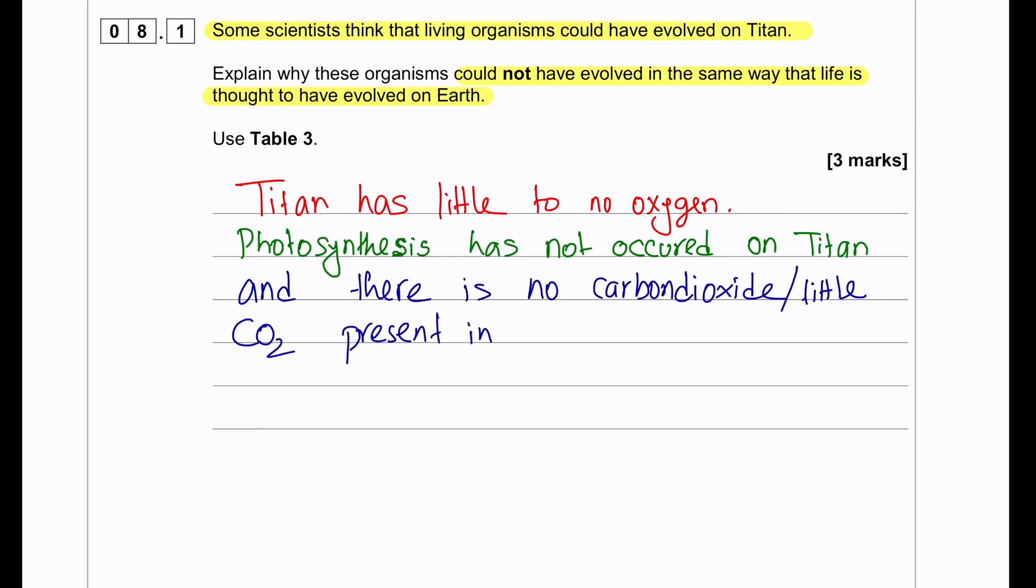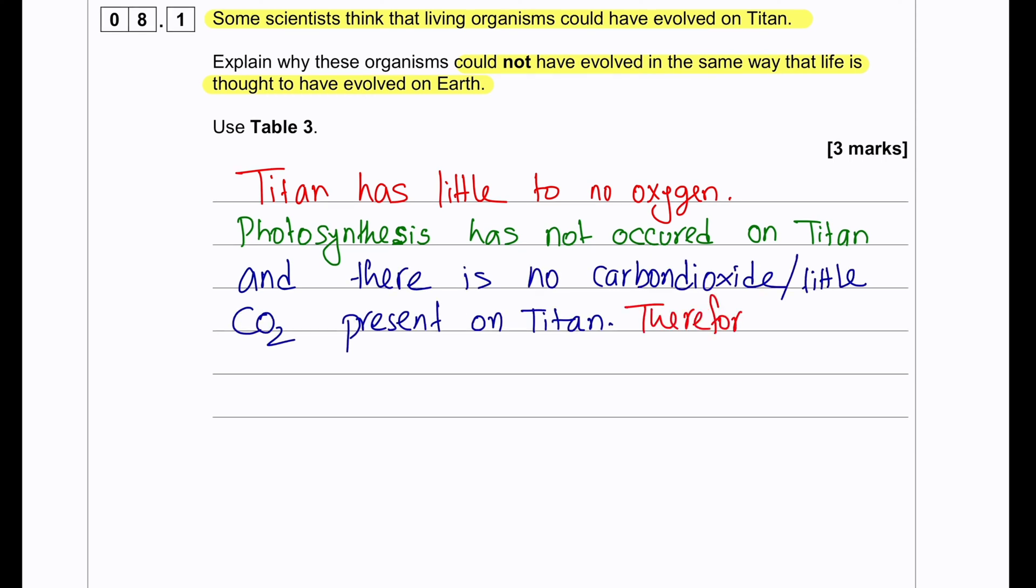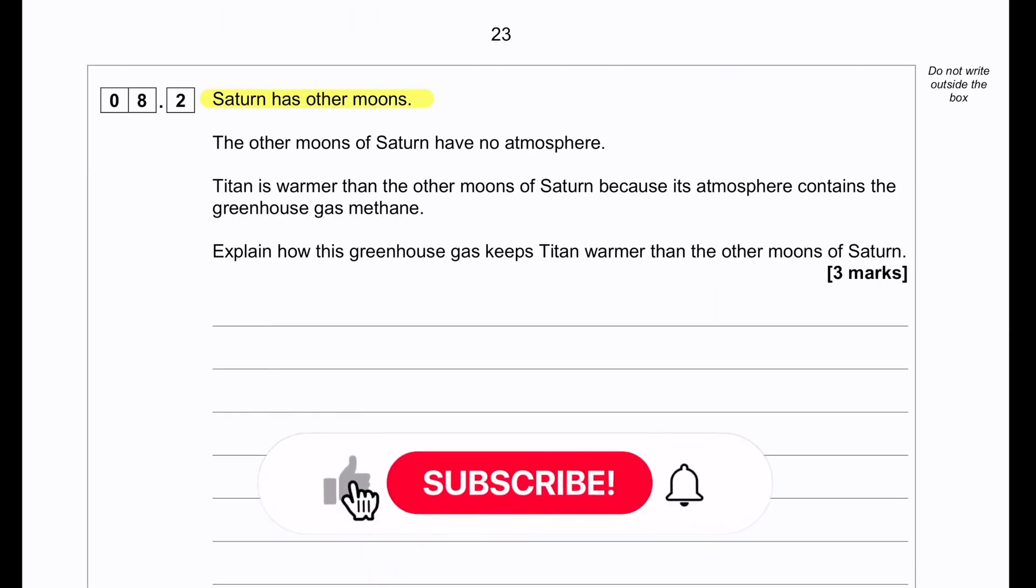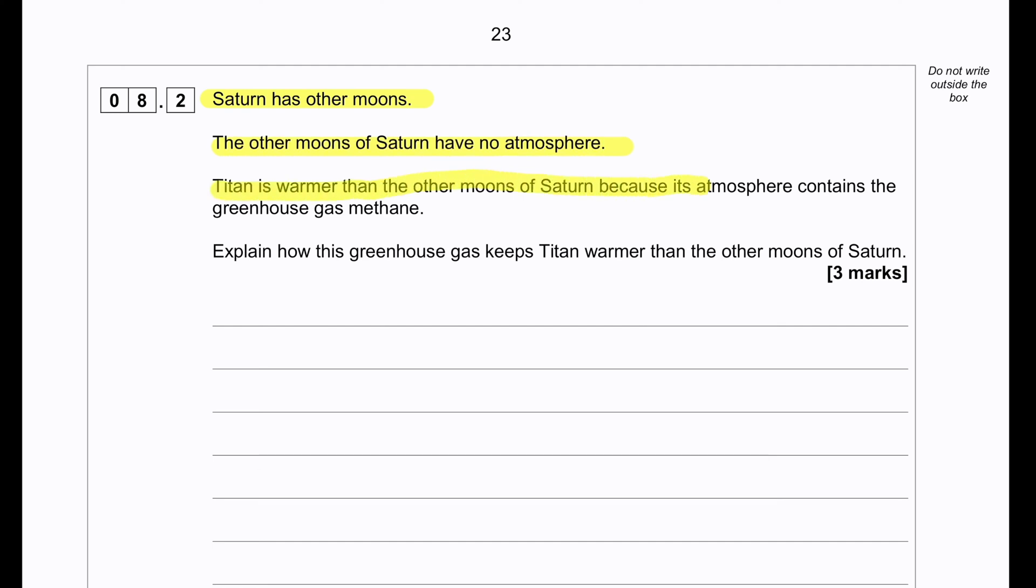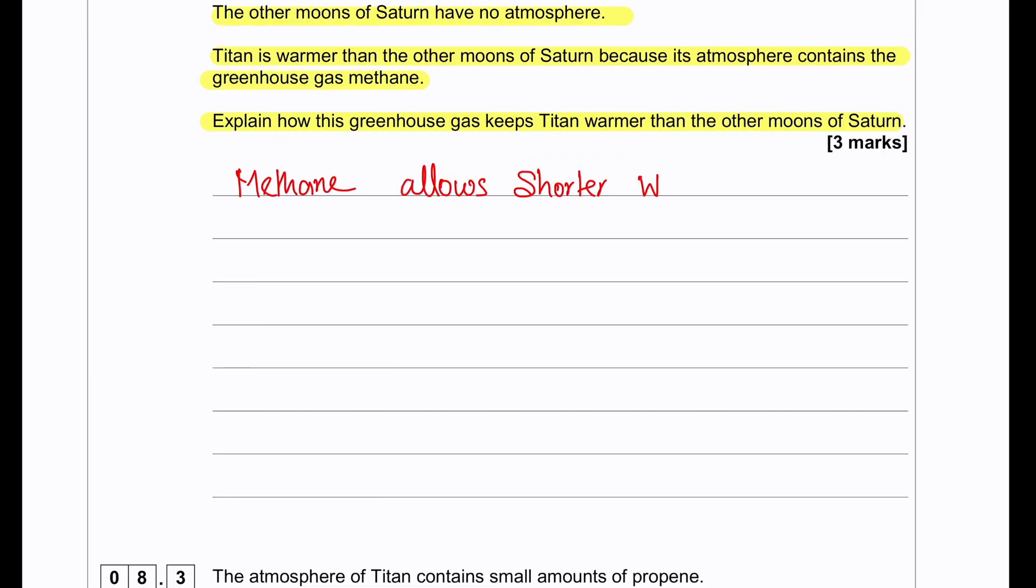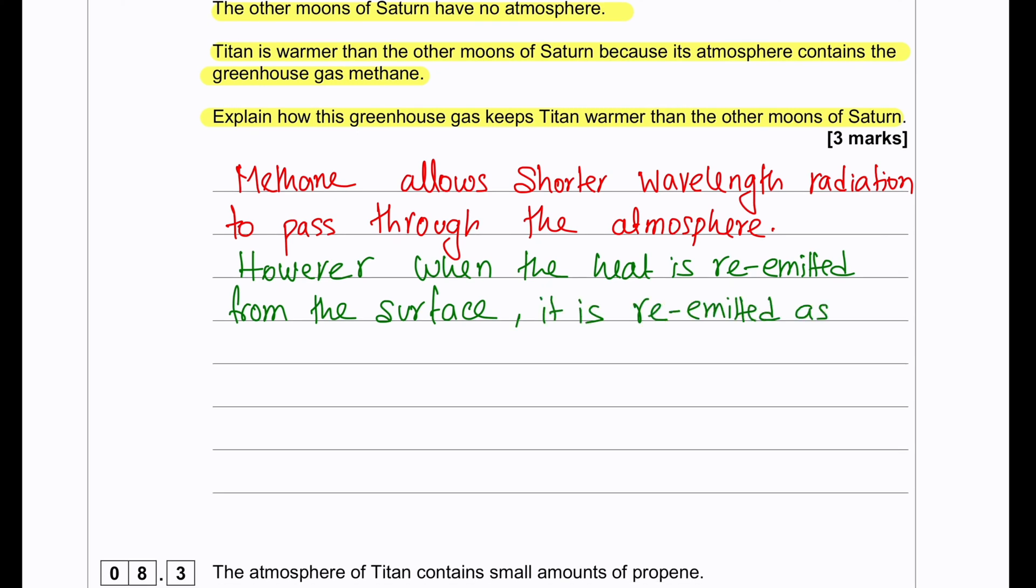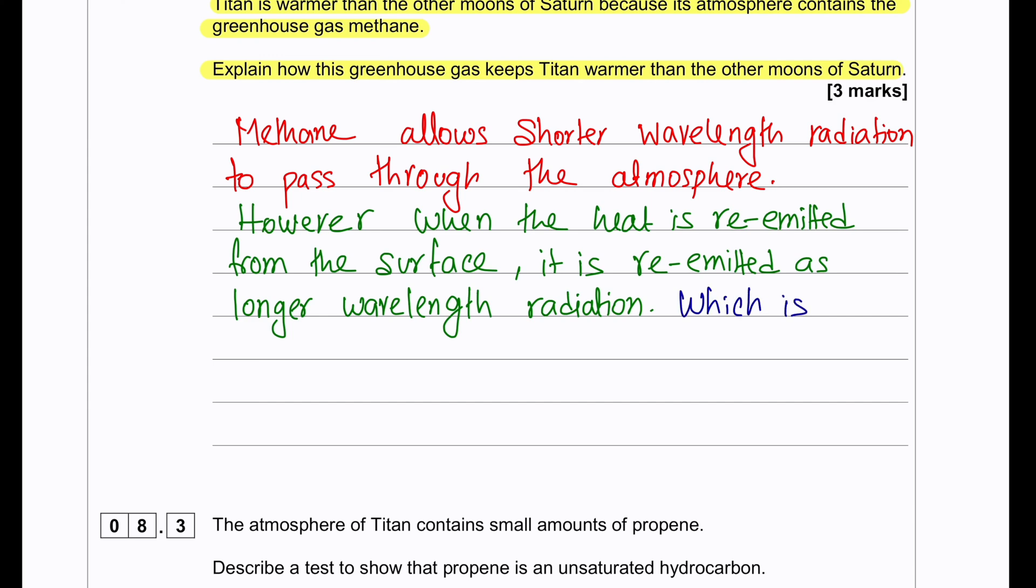Saturn has other moons. The other moons of Saturn have no atmosphere. Titan is warmer than the other moons of Saturn because its atmosphere contains the greenhouse gas methane. Explain how this greenhouse gas keeps Titan warmer. Methane allows shorter wavelength radiation to pass through from the sun, which is re-emitted from the surface as longer wavelength radiation like infrared radiation, which is then absorbed by methane in the atmosphere, which warms up the atmosphere.